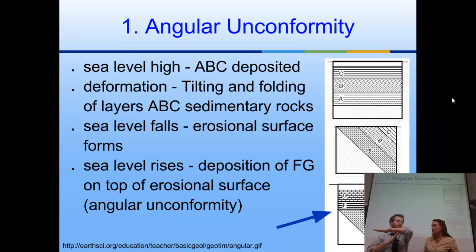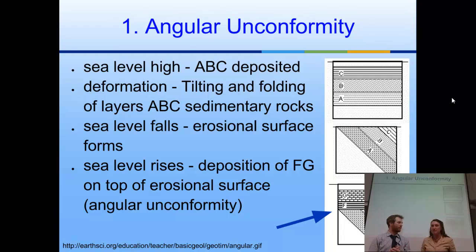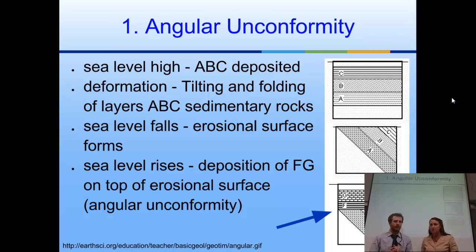Angular unconformity is usually the easiest to see because you can see the angle between the layers — horizontal layers intersecting with tilted ones. The unconformity itself is the erosional surface that sits below layer F, separating F from A, B, and C. That's the actual unconformity — a gap in time where we're missing part of the story, and we can't figure out what happened. It could be millions of years that are missing.